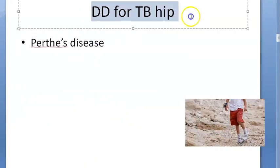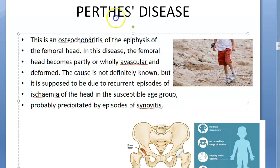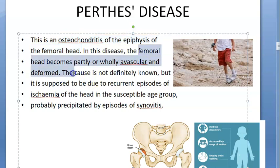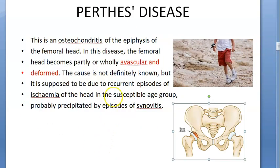This is actually a differential diagnosis for TB hip, which is why it is important to understand. What is Perthes' disease? It is osteochondritis of the epiphysis of the femoral head. The femoral head has partly or wholly become avascular and deformed.